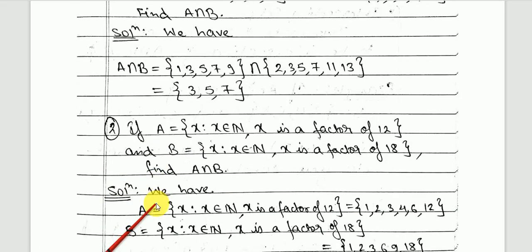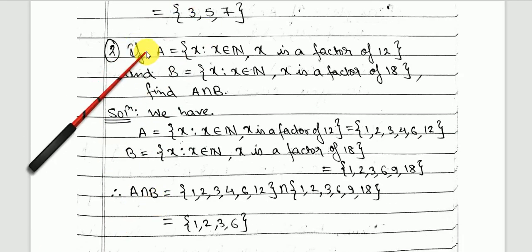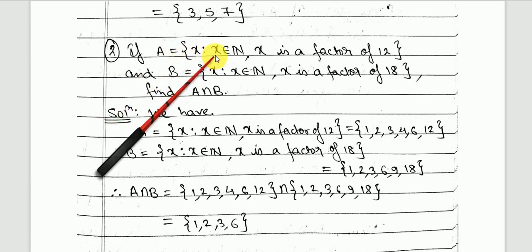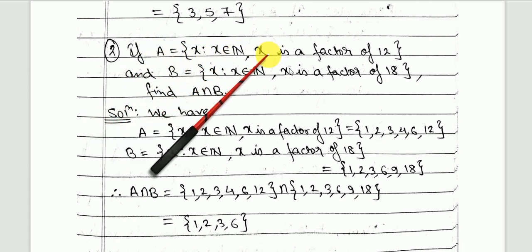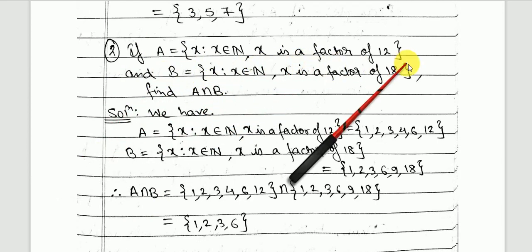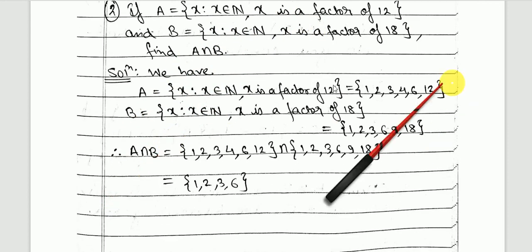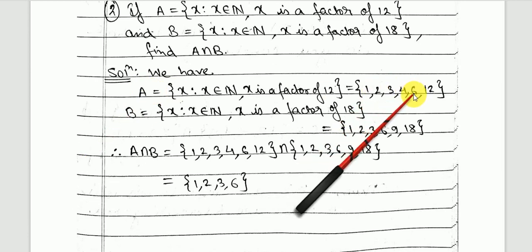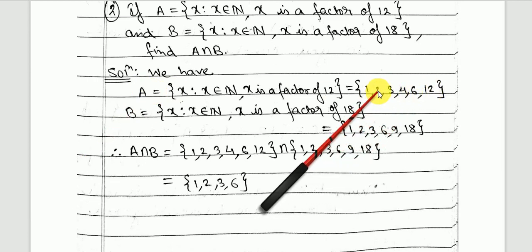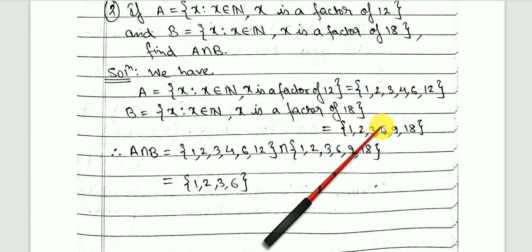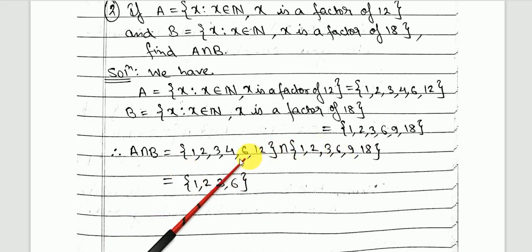Next, let A be the set of all natural numbers that are factors of 12, and B be the set of all natural numbers that are factors of 18. We find the intersection by writing only the common elements lying in both sets. So we get A intersection B = {1, 2, 3, 6}.